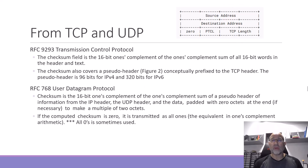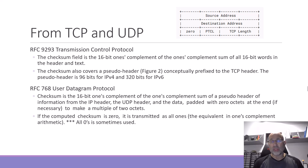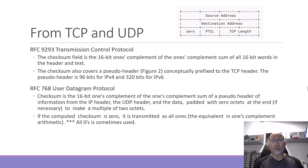At the top here we have the pseudo header, which includes part of the IP header. When we do a checksum for TCP and UDP, we include the source and destination address, the protocol field, and the length of the datagram from the IP header. This image is from the TCP RFC — RFC 9293, the one that put all the TCP stuff together. The ones complement of the ones complement sum includes the pseudo header, which is 96 bits for IPv4.